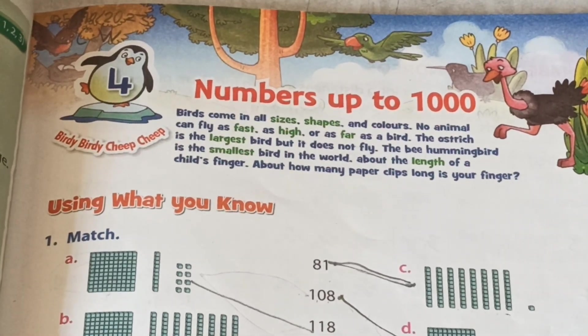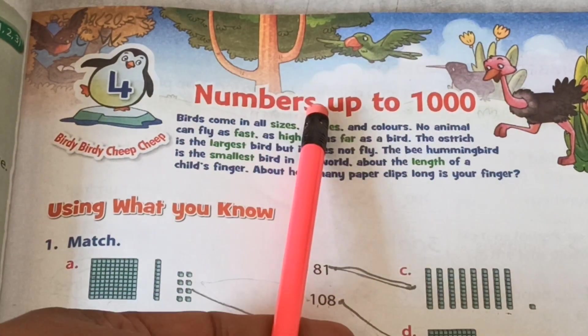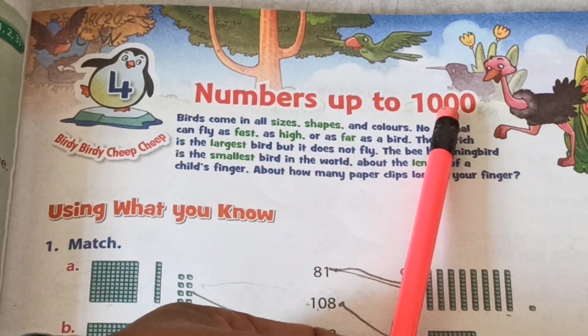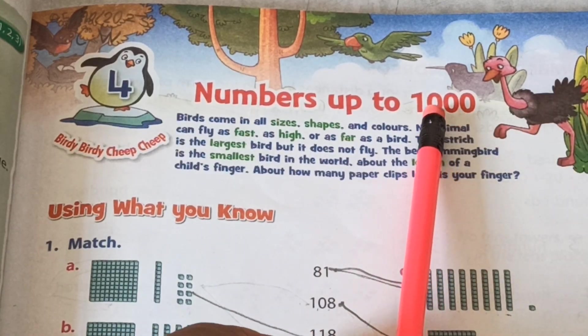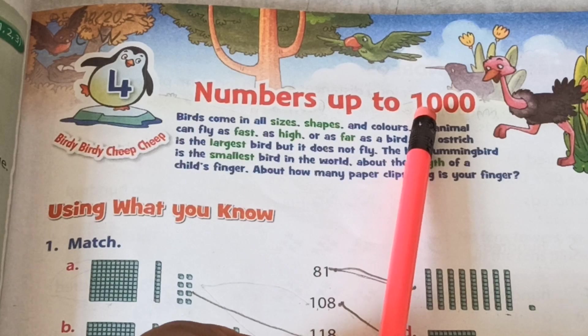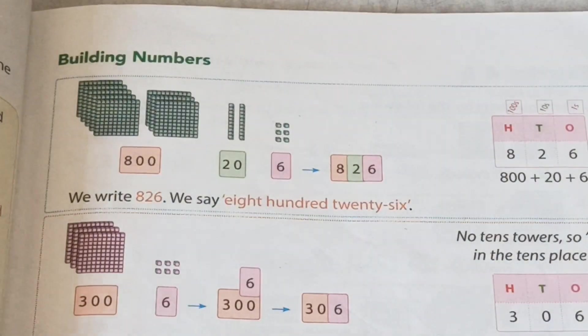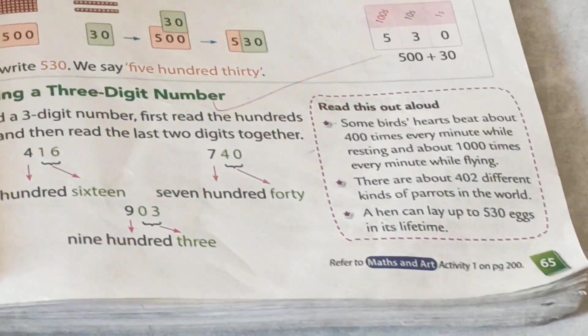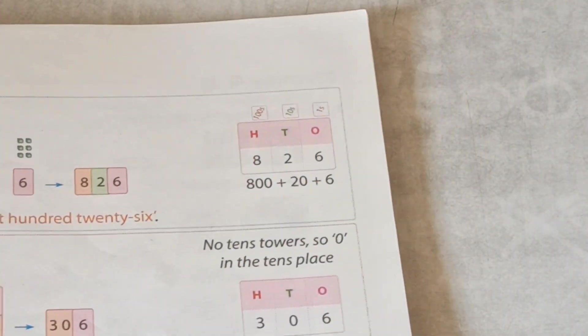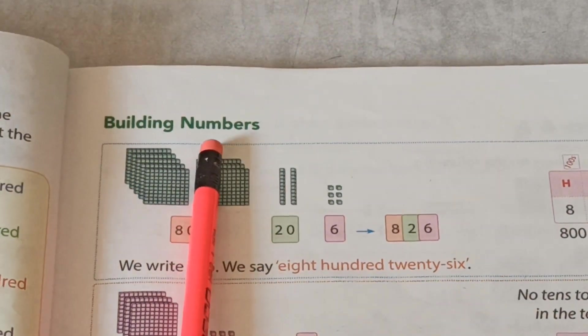Kids, we continue today our fourth chapter, numbers up to 1000, which means ten hundred. And today's topic is on page number 65: building numbers. Today we learn building numbers.